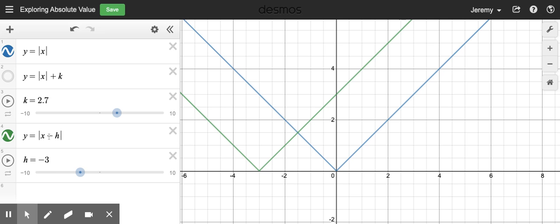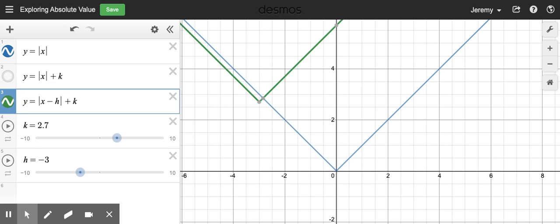And I can actually put these two ideas together. What I'm going to do is I'm going to add k on the end of my graph. And I'll just drag this up here. So I have my k and my h. And notice, when I write this equation, y equals the absolute value of x minus h plus k.